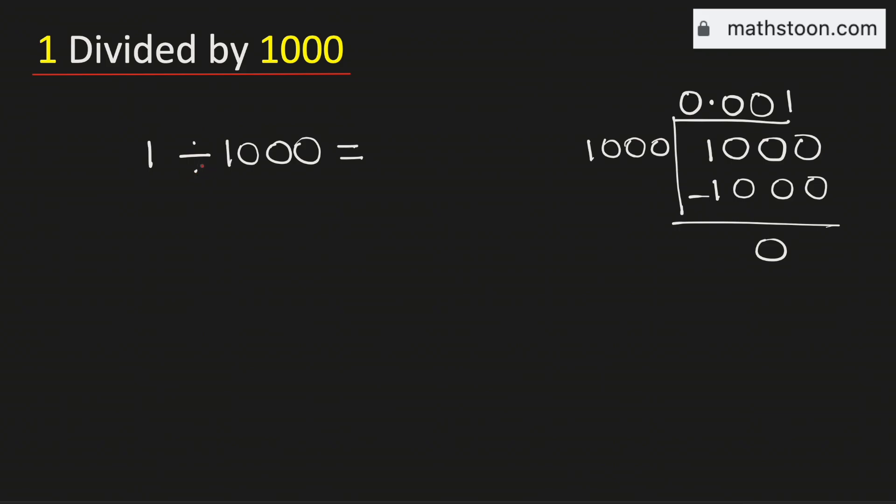Therefore the value of 1 divided by 1000 is equal to 0.001 and this is our final answer.